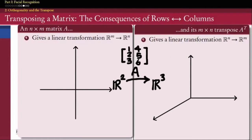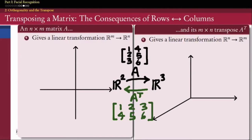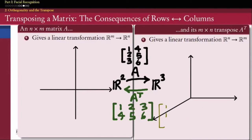If we turn that matrix on its side — where we used to have 3 rows and 2 columns, now we have 2 rows and 3 columns — A transpose gives a linear transformation going the opposite direction. It can take a vector with 3 components and produce a vector with 2 components. So A and A transpose define linear transformations on the same pair of vector spaces but going in opposite directions: A goes from R2 into R3, A transpose goes back from R3 into R2.